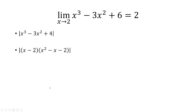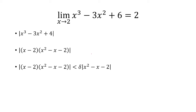From here, we can factor it as x minus 2 times x squared minus x minus 2. We said delta is greater than the absolute value of x minus 2, so the x minus 2 factor comes out as an absolute value. Then you have the absolute value of x minus 2, which is less than delta, multiplied by the absolute value of x squared minus x minus 2.